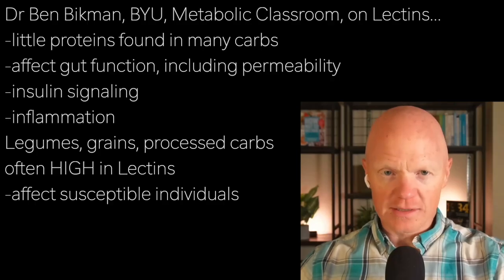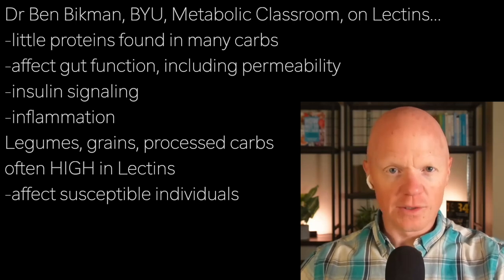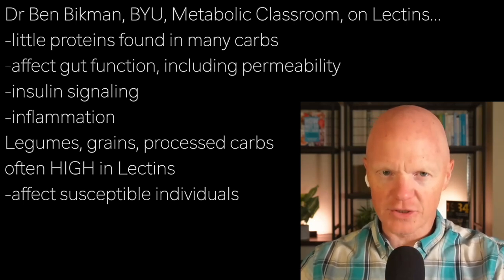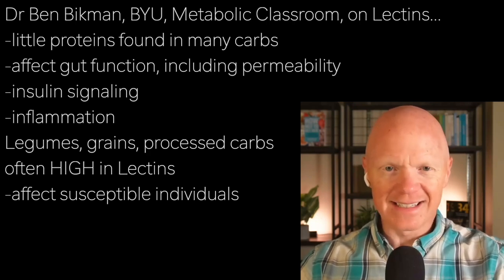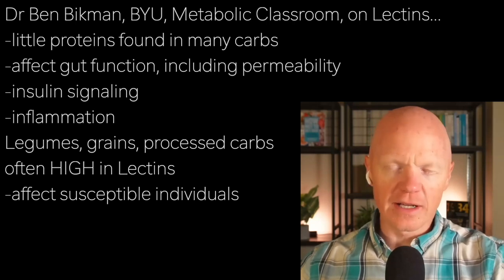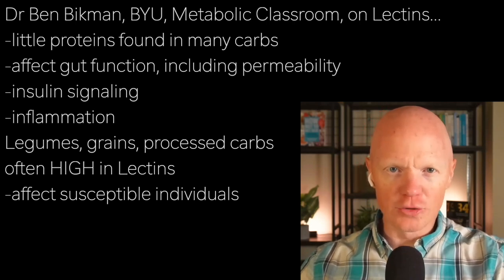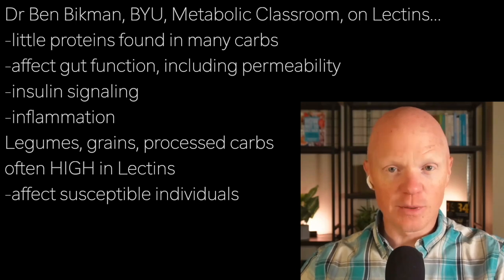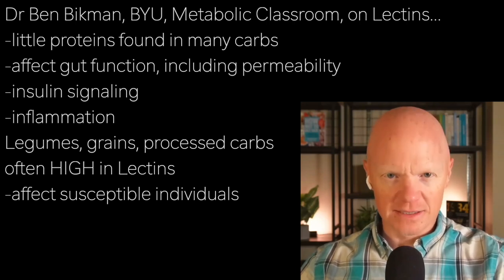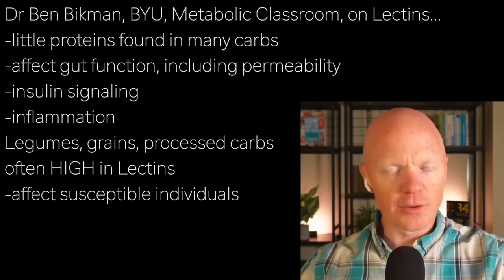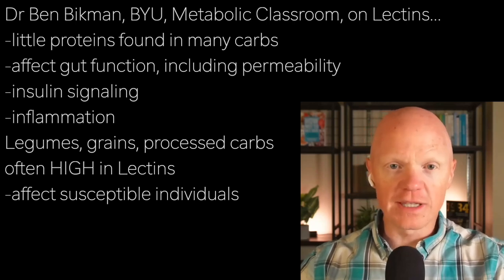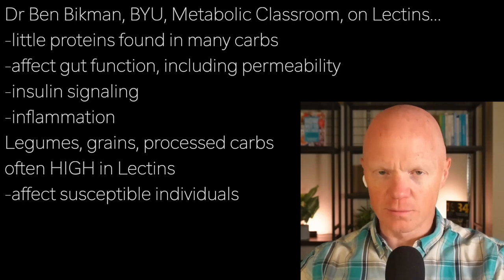Lectins are one of the more prevalent and problematic, and they have become a significant topic in nutritional science. These proteins are found in many common carbohydrates, and they affect processes like gut function, including permeability, insulin signaling, and inflammation. Modern diets, often rich in things like legumes, grains, and other processed carbohydrates, can expose us to lectins in ways that impact susceptible individuals in particular. The research we're going to review will highlight the effects on permeability and metabolic consequences, all of which has an impact on our cardiometabolic risk factors and diseases.